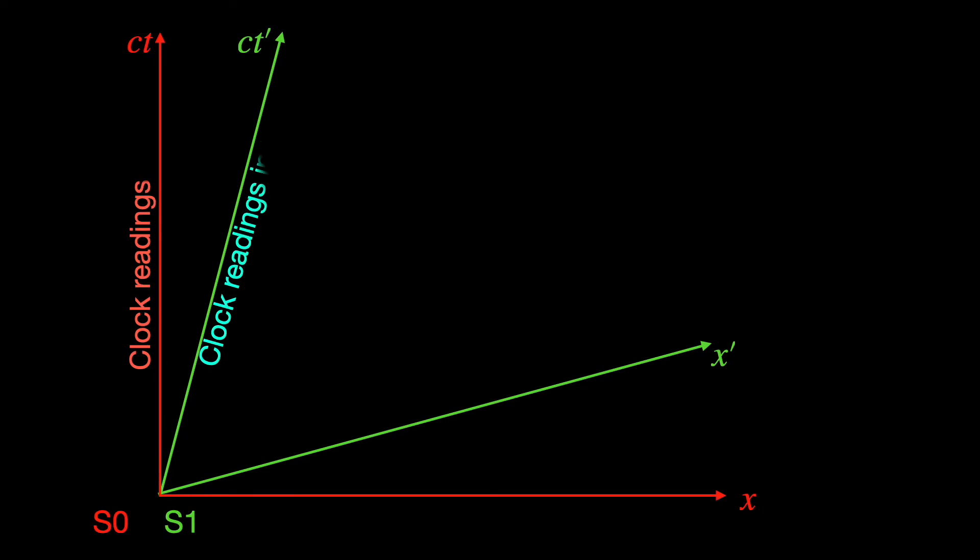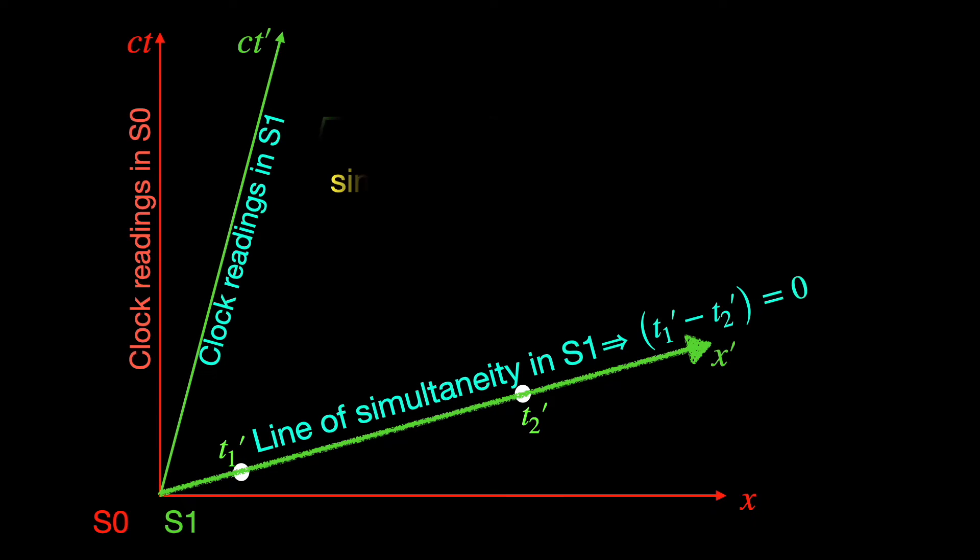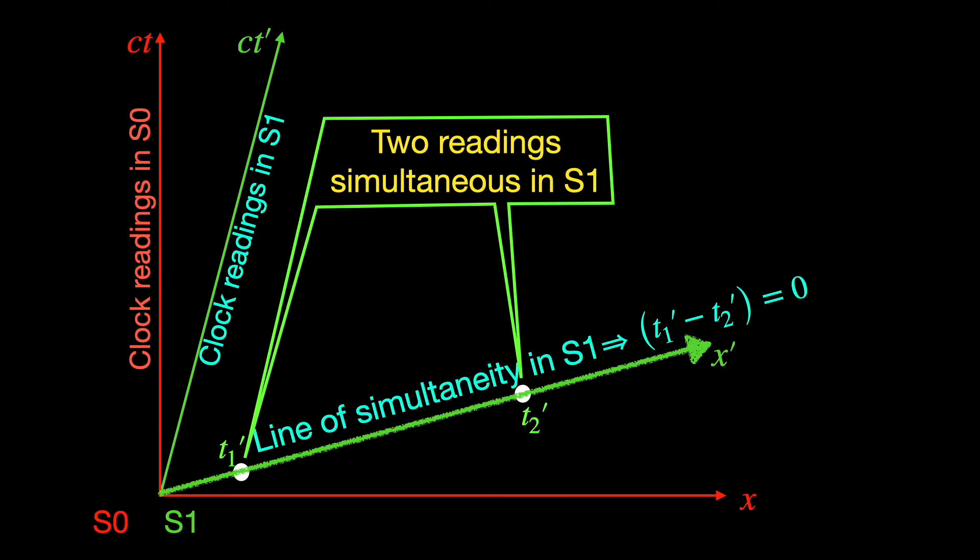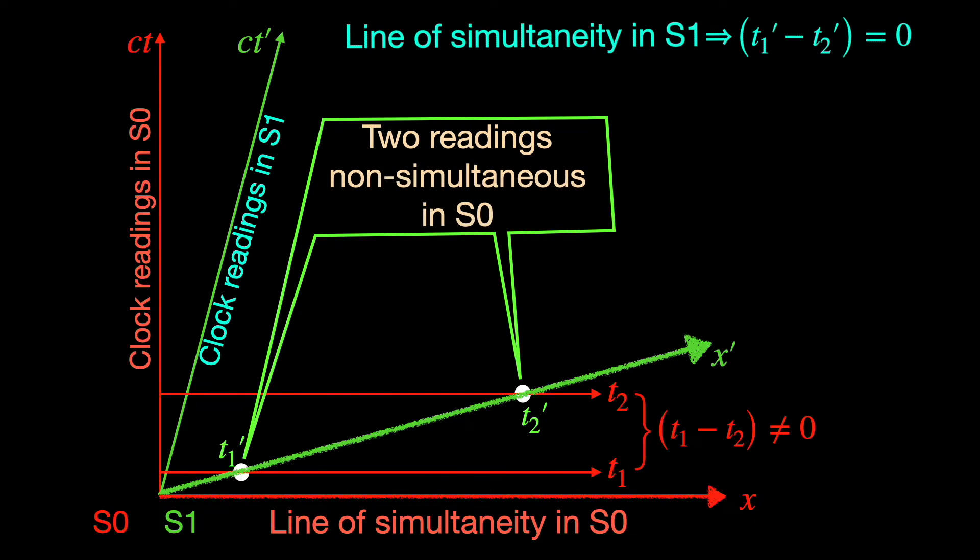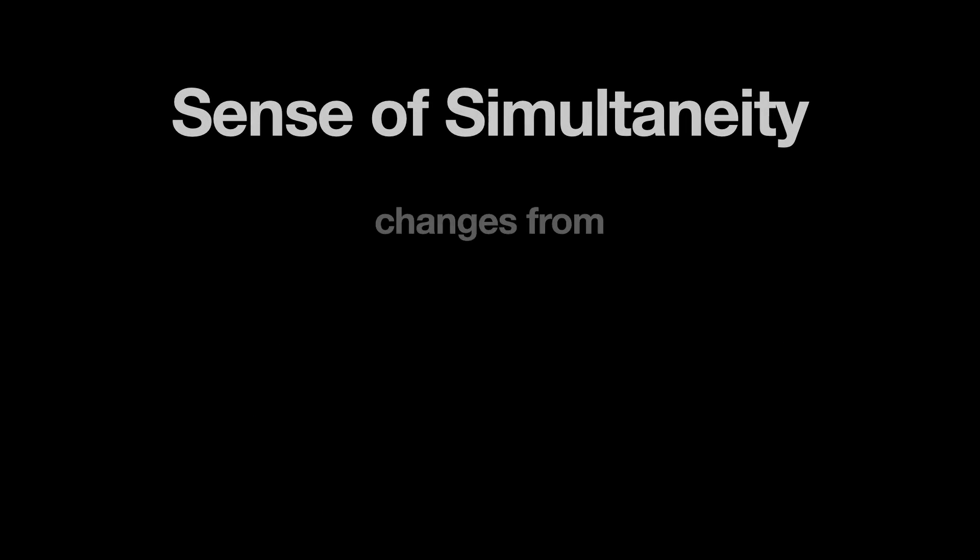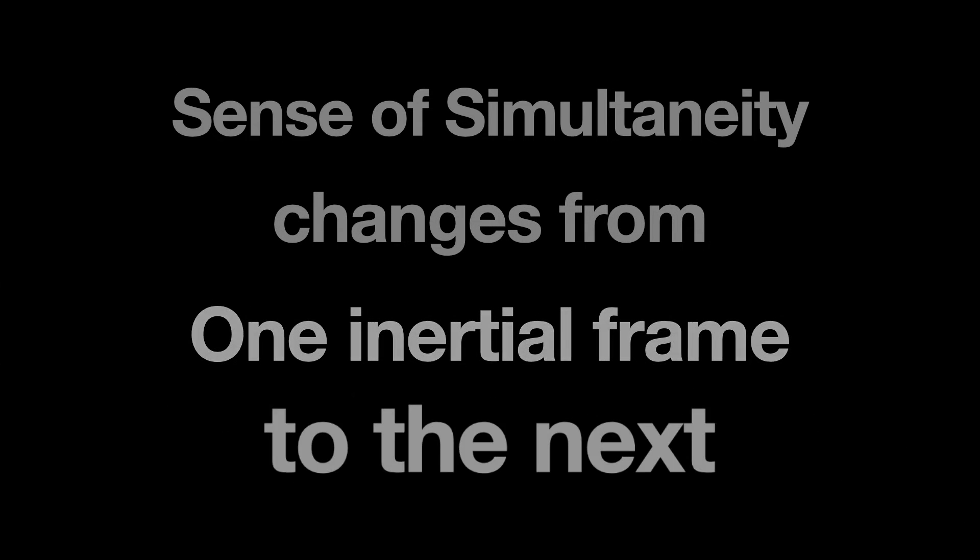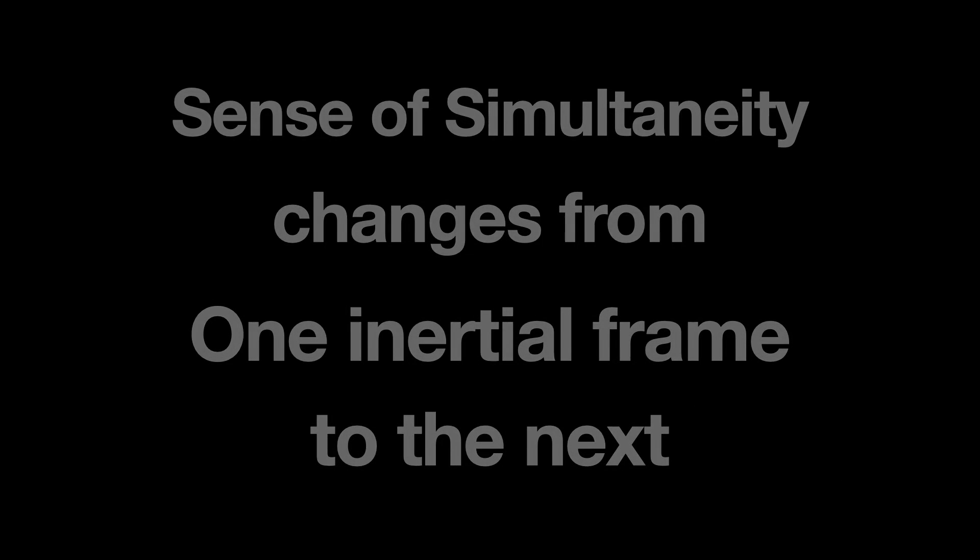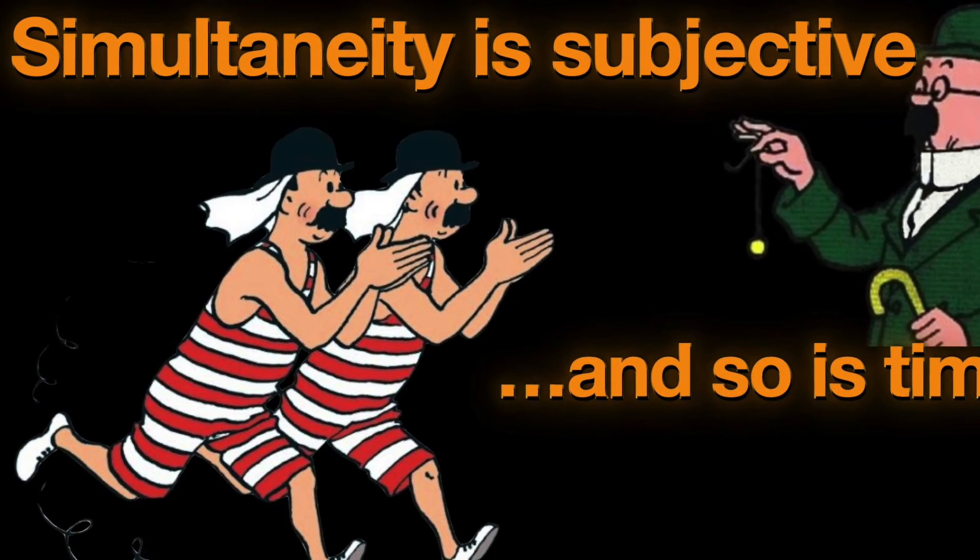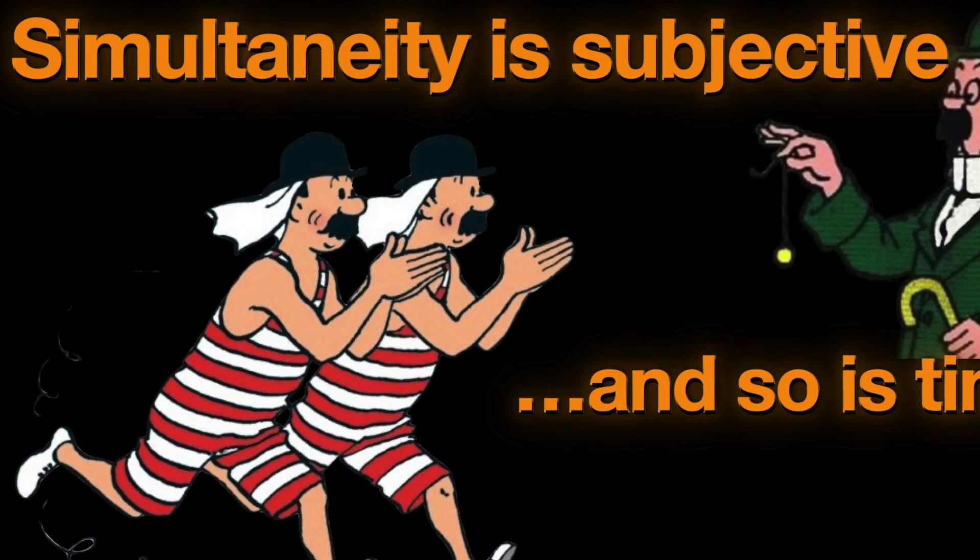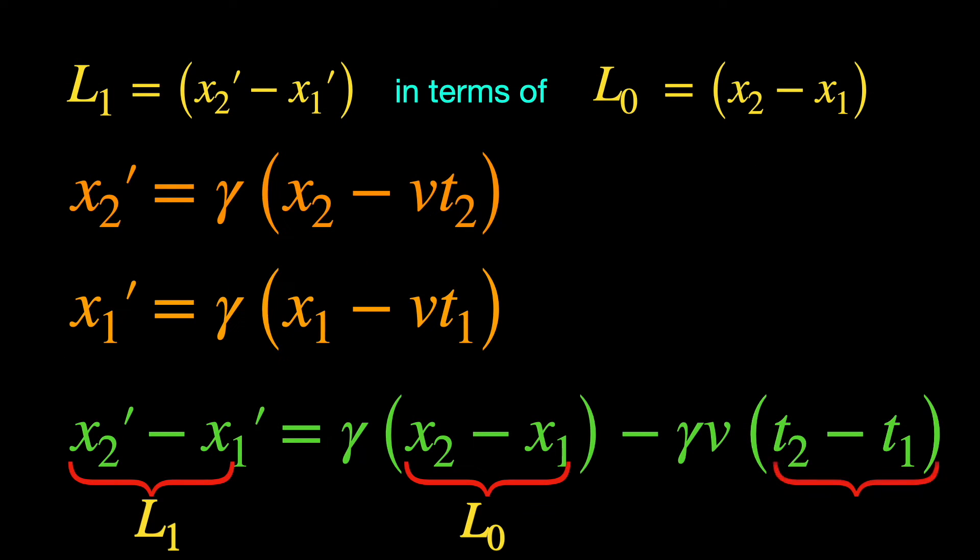Though the S1 frame observers note down the space coordinates of the two endpoints of the stick simultaneously according to their S1 frame clocks, we in S0 see them taking these readings at different time instants t2 and t1 according to our S0 frame clocks. This is because the perception of simultaneity in inertial frame S1 is different from what we perceive in inertial frame S0. This we have discussed and established in detail in an earlier video. You can check it from the i-button and description. Anyway, the t2 minus t1 appearing in the expression of L1 should thus be non-zero.